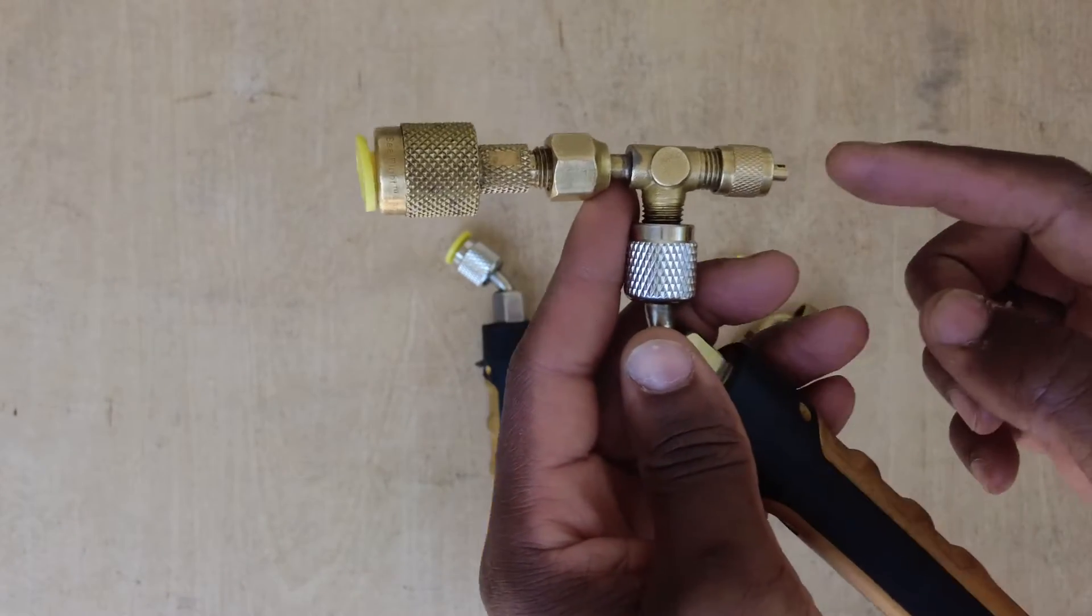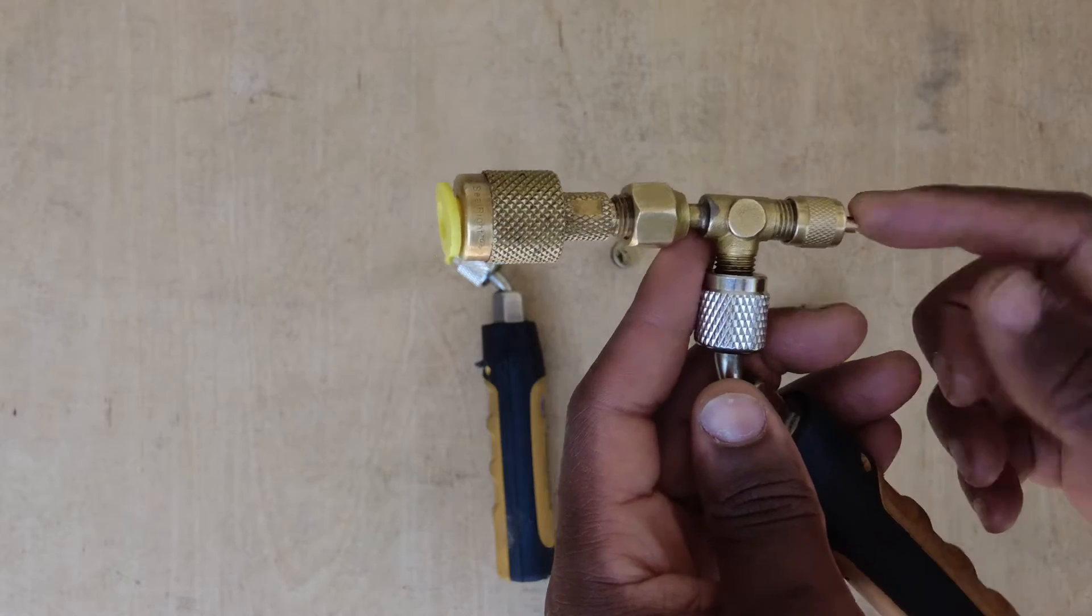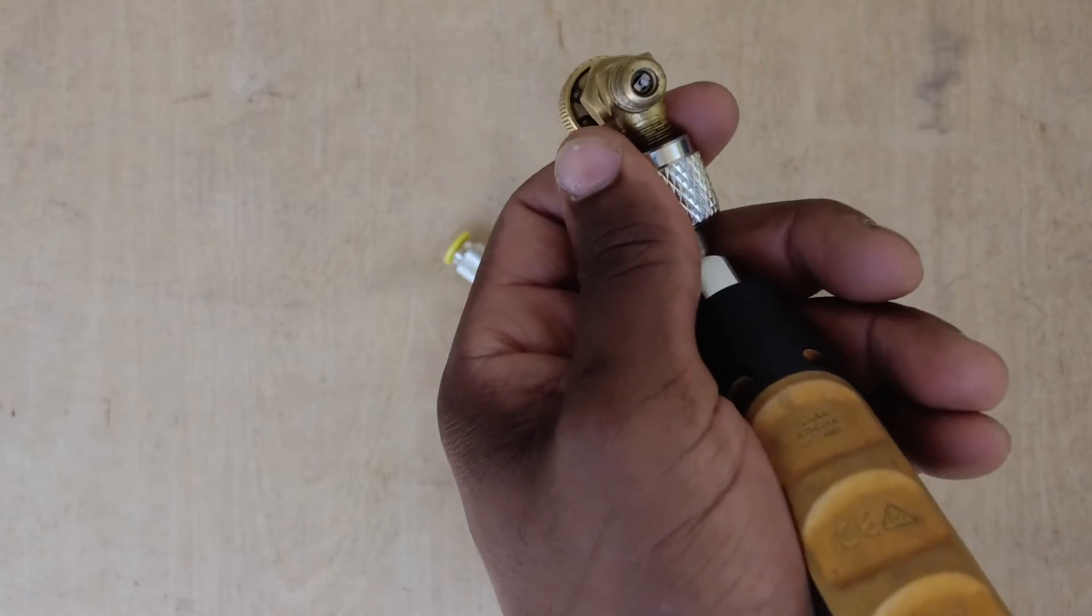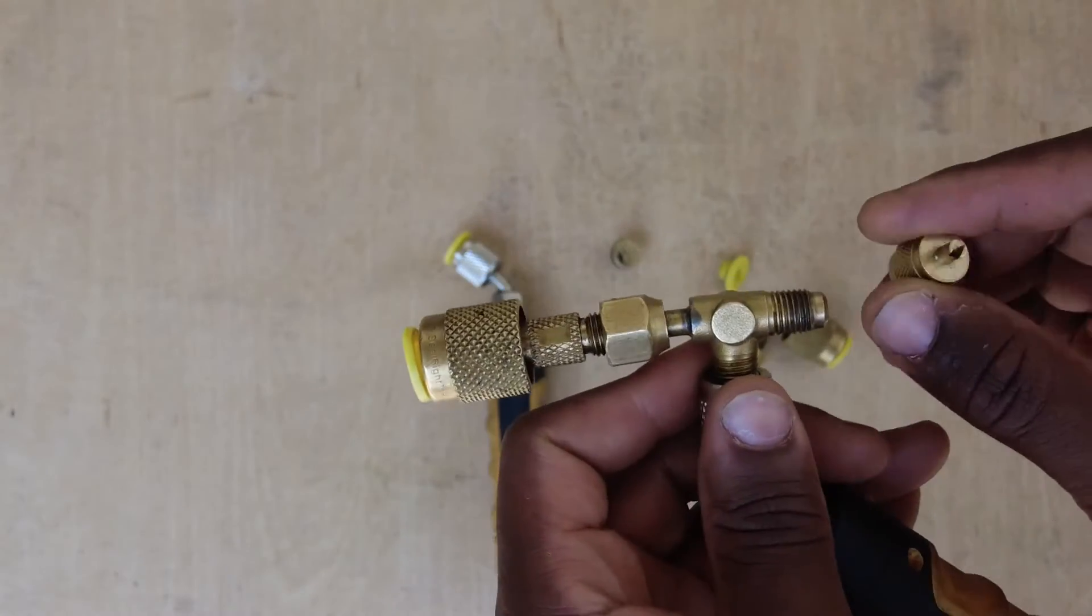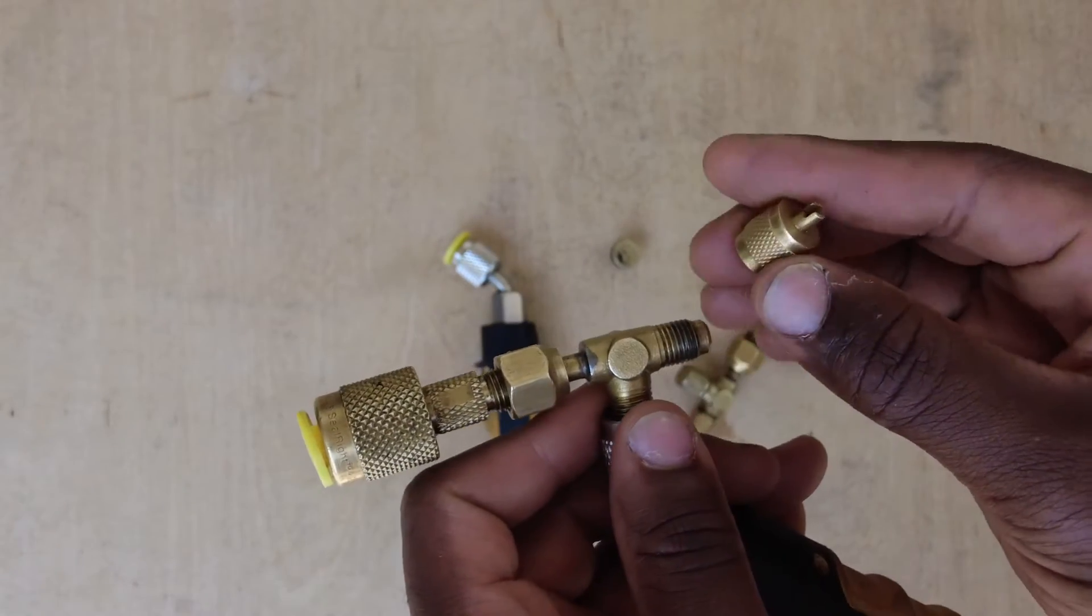And I can just put my charging hose on this side here. It's got the Schrader core in there already. Keep a Schrader core remover cap on there as well.